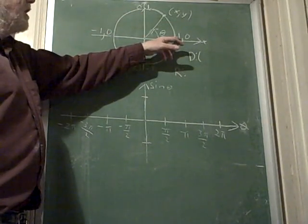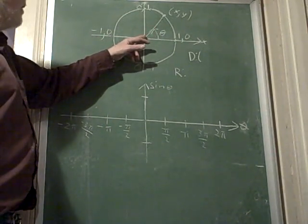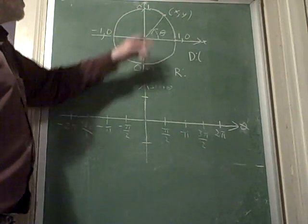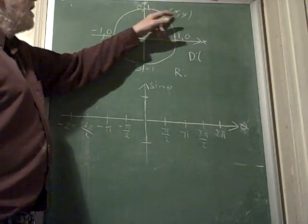And the cosine of, let's see how I should say this. If I take an angle theta and I run a ray, the terminal side, out to the unit circle, then the x value is the cosine of that angle. And the y value is the sine of that angle.